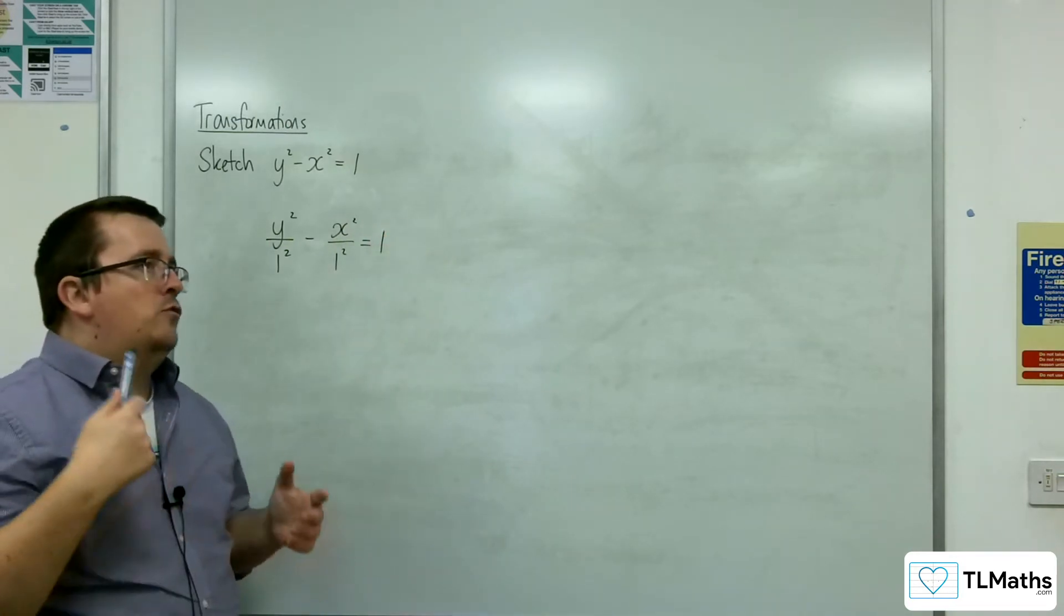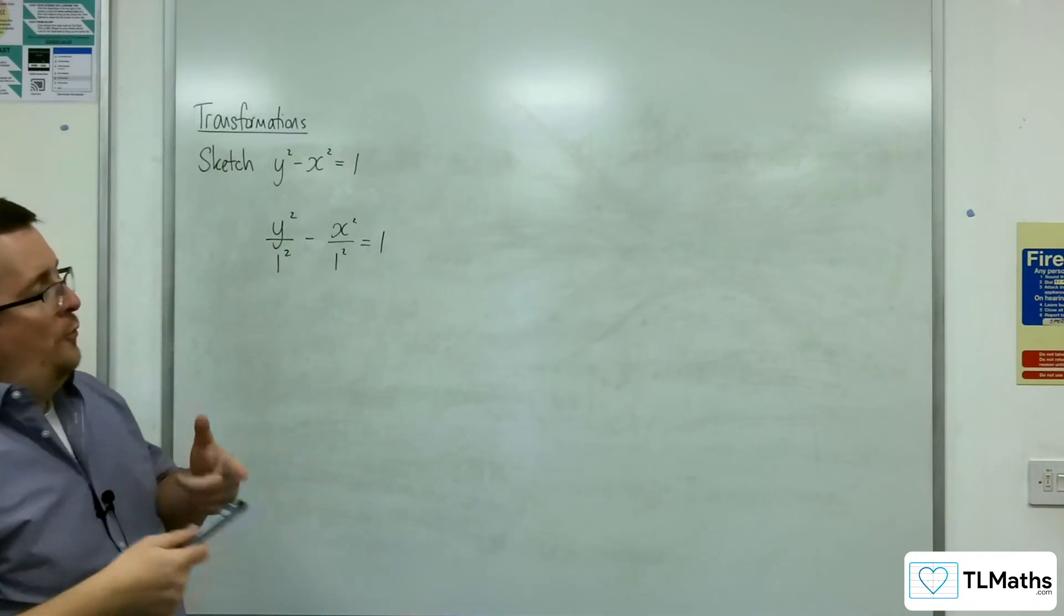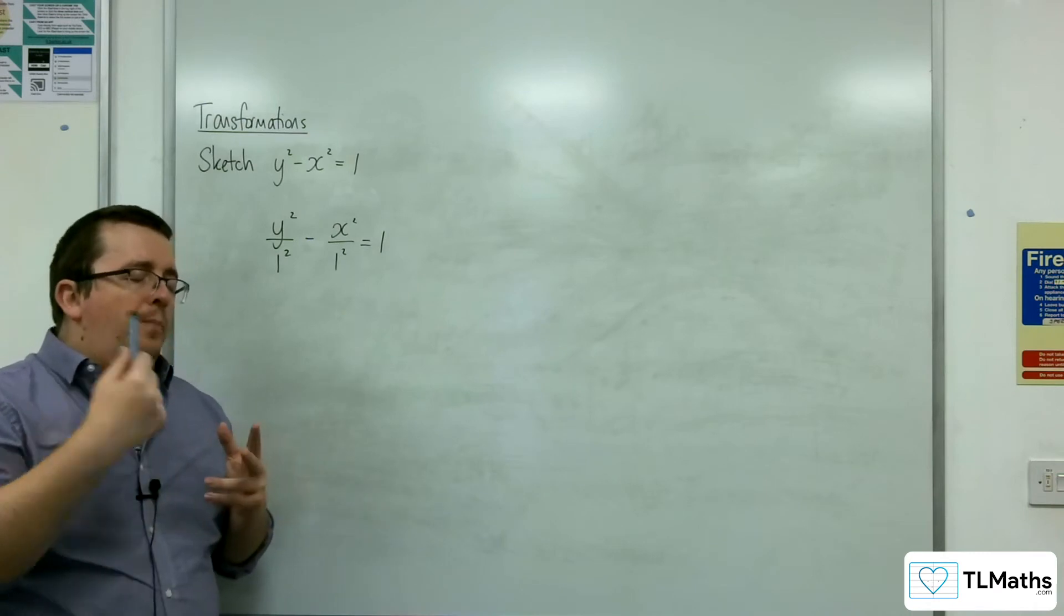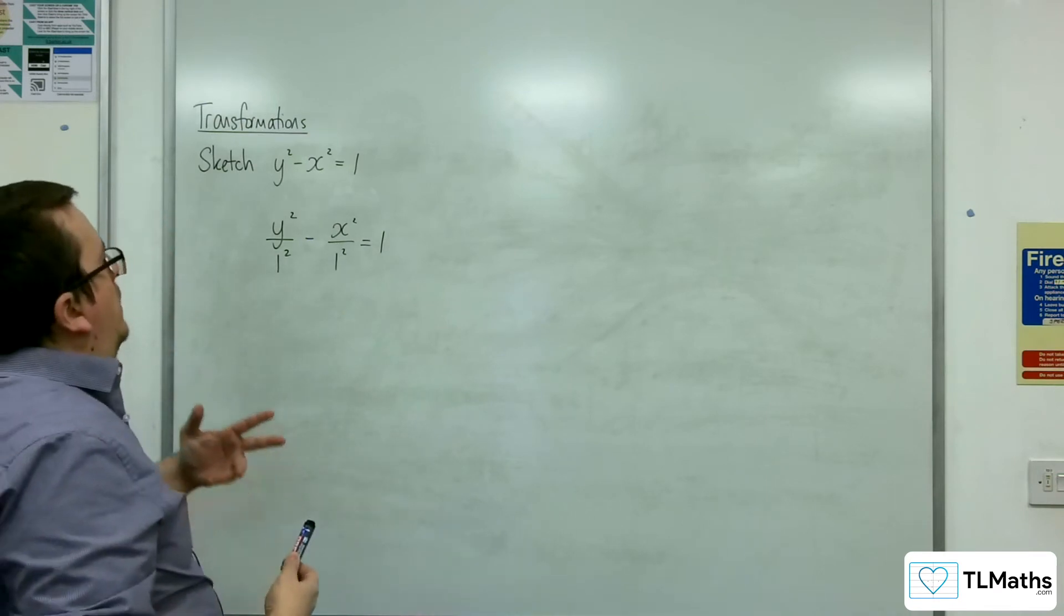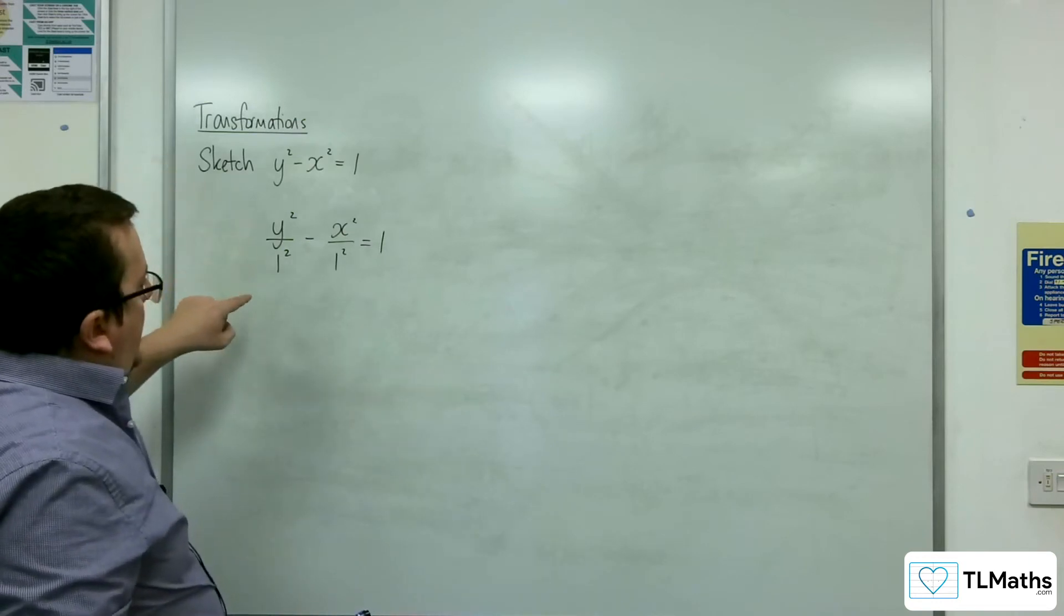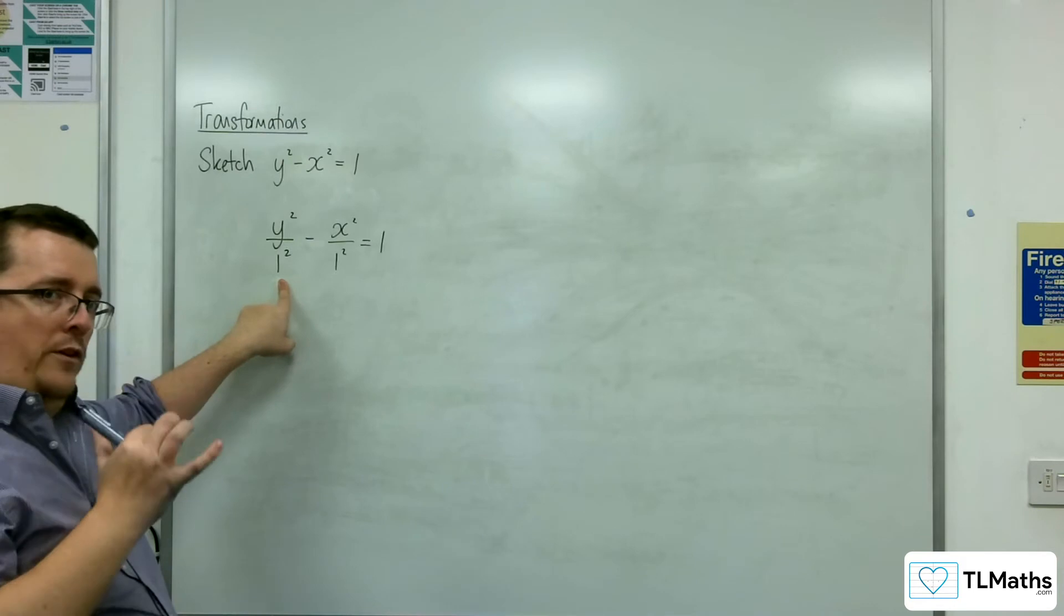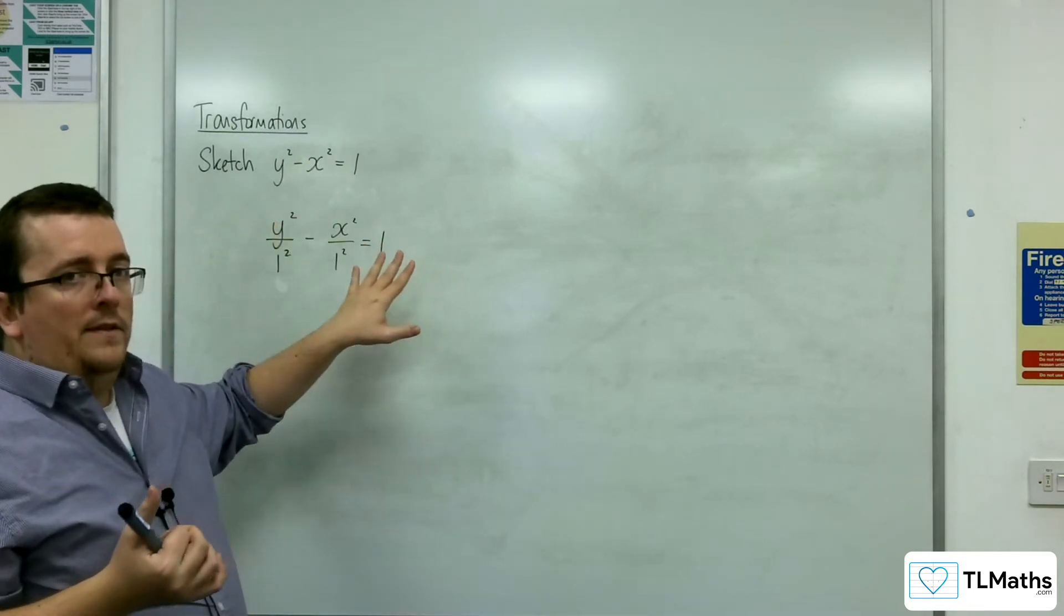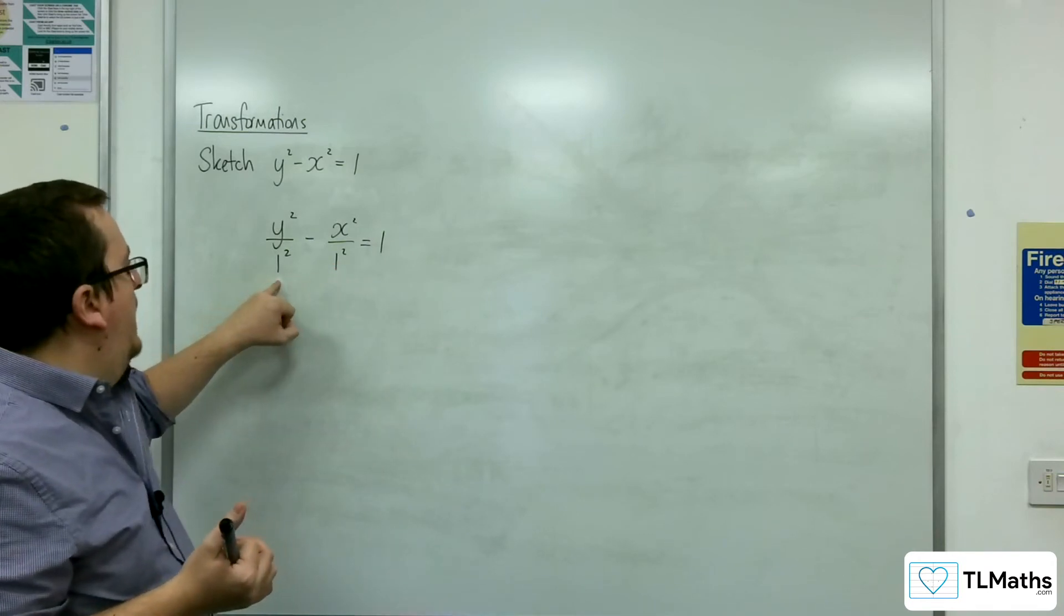Now, what you need to remember is that, in the form that we had it before, the asymptotes were y equals plus or minus b over a x. Now, the a is still this one on the left, because remember, the x's and y's have been swapped. The a hasn't followed the x. So, that's not a now. That's a, and that's b.